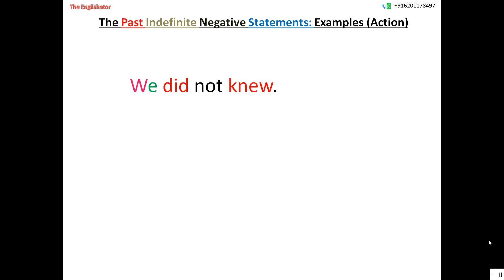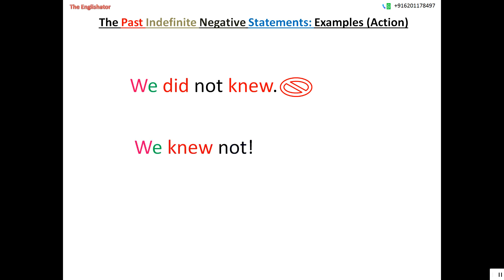You should not make statements such as 'We did not knew,' because once you have used 'did' — which itself is the V2 form of the auxiliary verb 'to do' — you should not use the V2 form of the main verb. Such sentences are wrong; use the V1 form instead, as the formula states. You might come across sentences like 'We knew not,' but such sentences are only possible in poetry and should not be used in formal speech or writing.